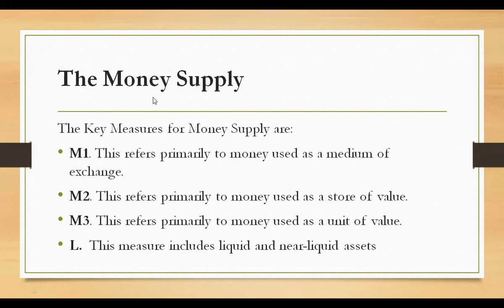Starting with the money supply: although the general description of money is relatively straightforward, the precise definition of the overall supply of money is complex because of the wide variety of forms of money in modern economics. The key measures for money supply begin with M1, which refers primarily to money used as a medium of exchange.